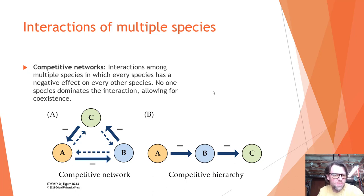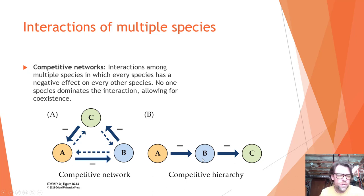Competitive networks are interactions among multiple species in which every species has a negative effect on every other species, but no one species dominates the interaction, allowing for coexistence. Previously we learned that competition between two species can drive one to extinction, but in a competitive network, the interactions among three or more species — all negative — actually allow each species to coexist.